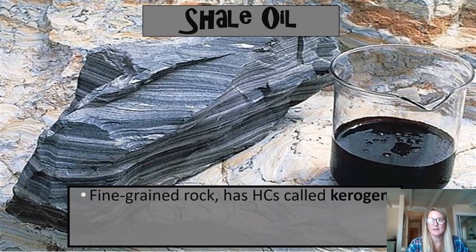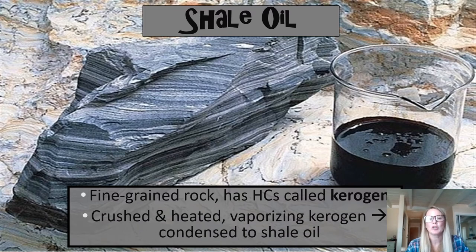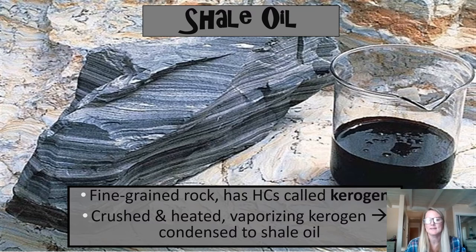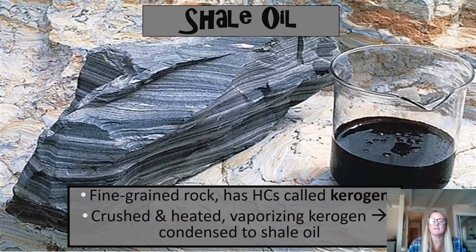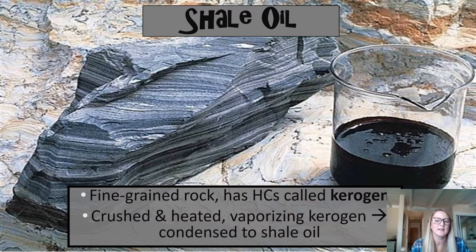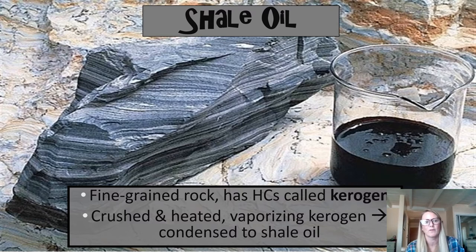With oil deposits becoming limited, we're looking at other sources of oil so our industries can continue to run. One is called shale oil — pretty much oil in a rock. You mine the shale, and inside it there are hydrocarbon chains called kerogen. You grind the rock down and then heat it, and the kerogen will vaporize. You can then take that oil and use it just like oil pumped from the ground, though it's more energy intensive because you have to remove the oil from the rock.